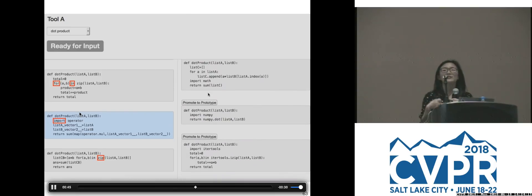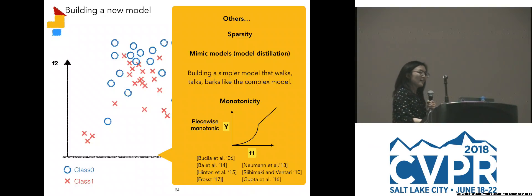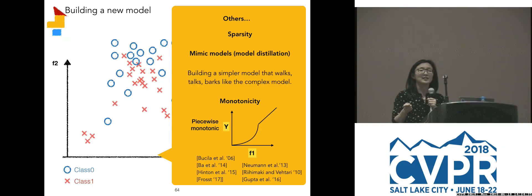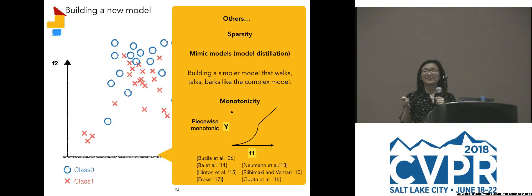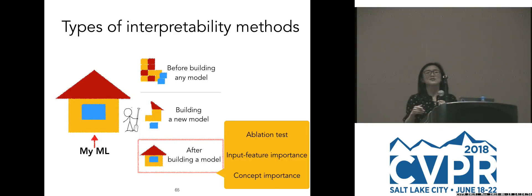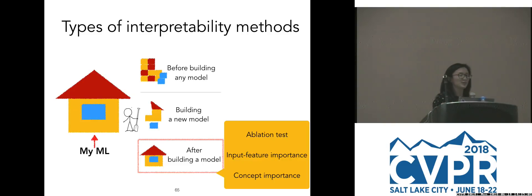Other constraints and mediums you can use include sparsity, mimic models — build a model that behaves like your complex model. If you can do this globally, forget about your complex model, replace it with your simple model and you're done. You can enforce monotonicity, which means once the function is going up, it keeps going up, and once it starts going down, it keeps going down — this lessens the burden for humans parsing the information. I also saw a couple of papers at CVPR this year that build inherently interpretable models by constraining filters and other cool stuff — I encourage you to check them out.